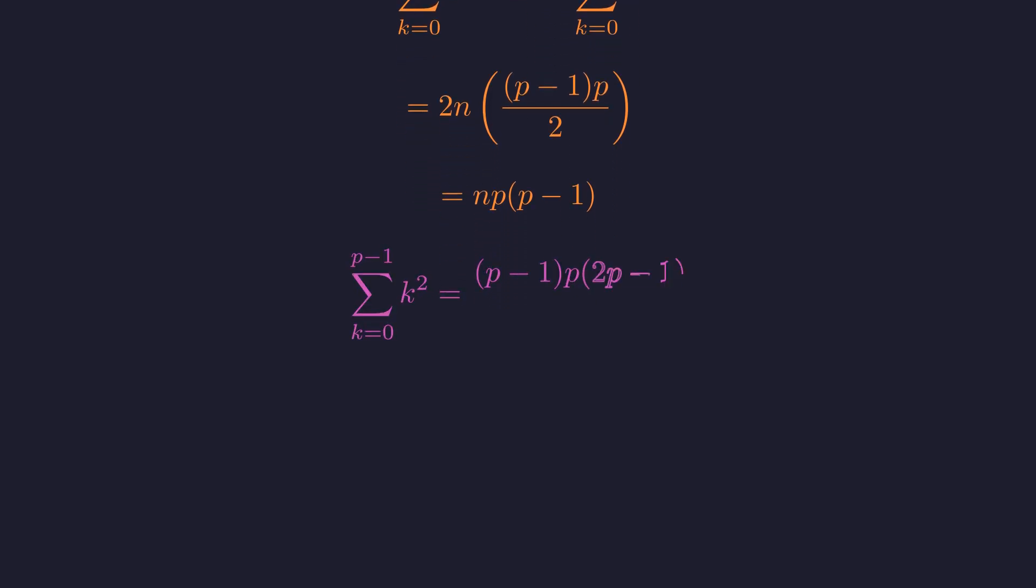For the third sum, we use the formula for the sum of squares from 0 to p-1, which is p times (p-1) times (2p-1), all divided by 6. This is another key result in discrete mathematics.